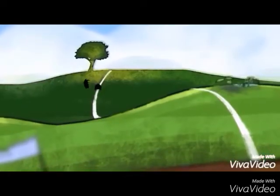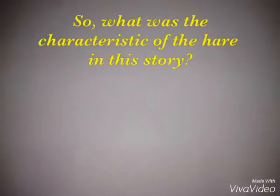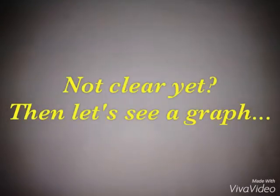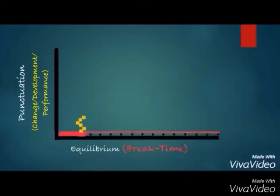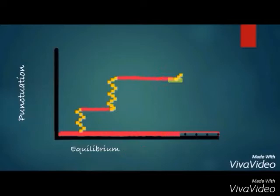Here, the vertical line represents punctuation and the horizontal line represents equilibrium. Look at the yellow curve — this curve represents the change, performance, and development of a group. The red line shows the break time that a group takes while working. This is how a group develops under the punctuated equilibrium model.